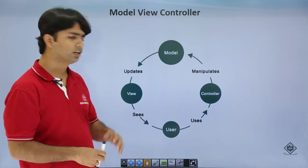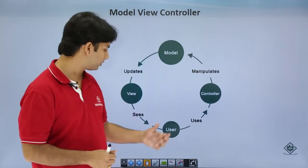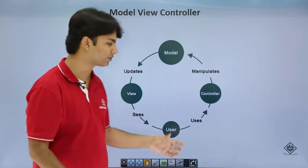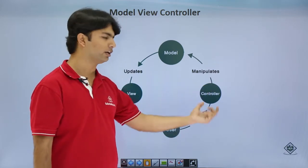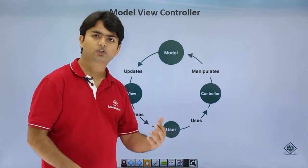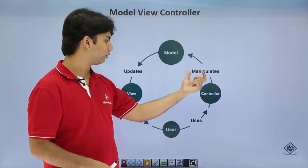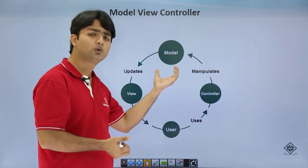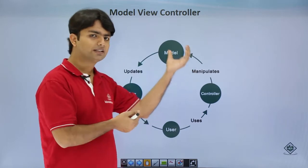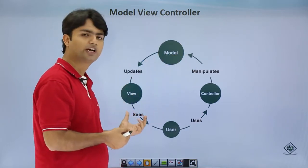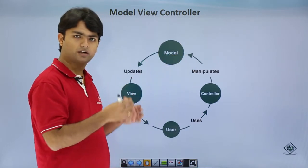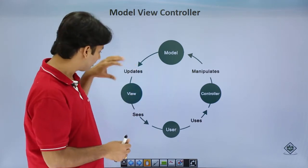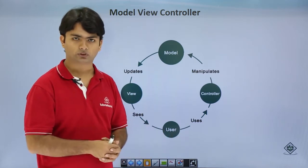Let's see this graphically for a better understanding. The execution begins from the user — as soon as the user makes a request, that request is handled by the controller. According to the request, it determines which particular model and which data needs to be bound. The appropriate model is used, and then that model is used to update the view so the data is in a representational form.